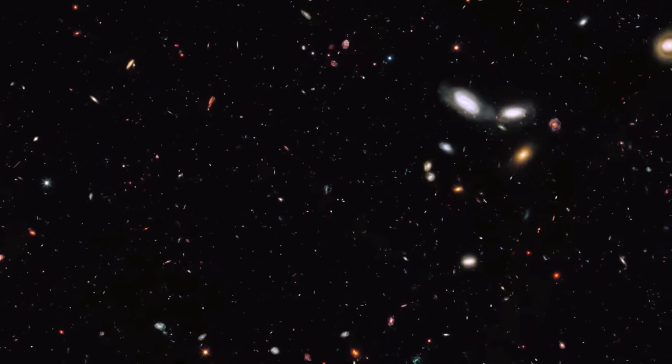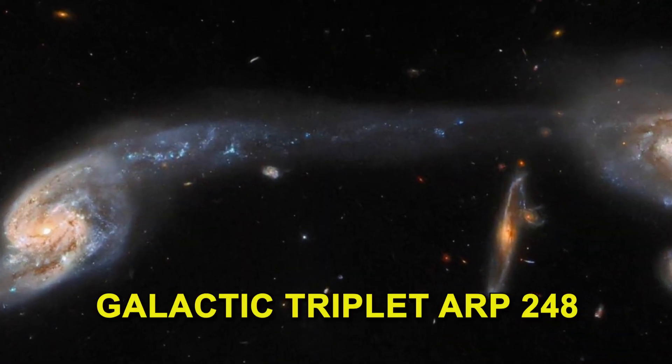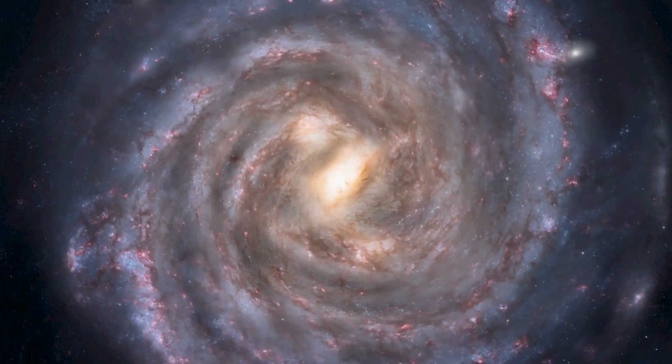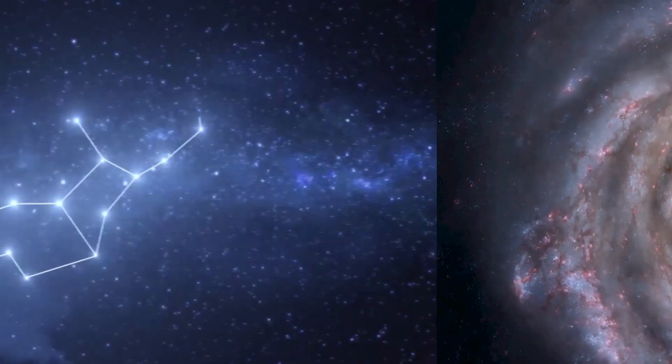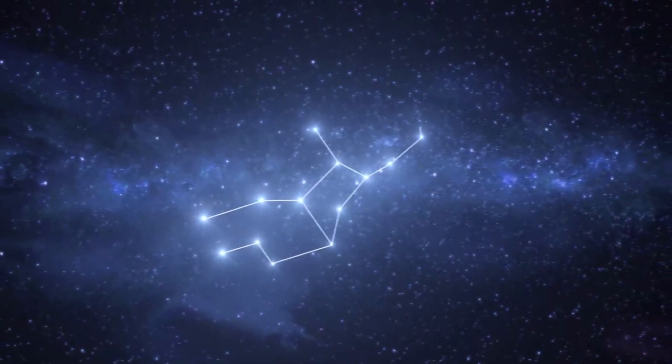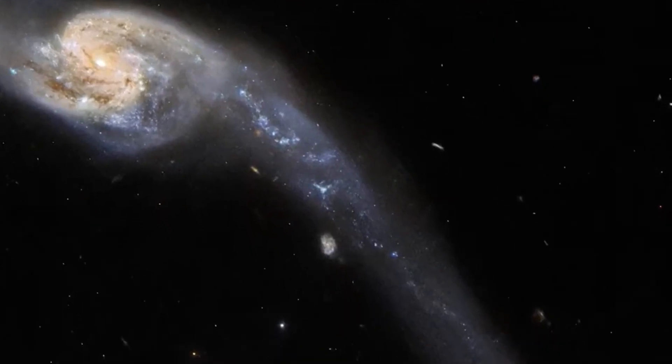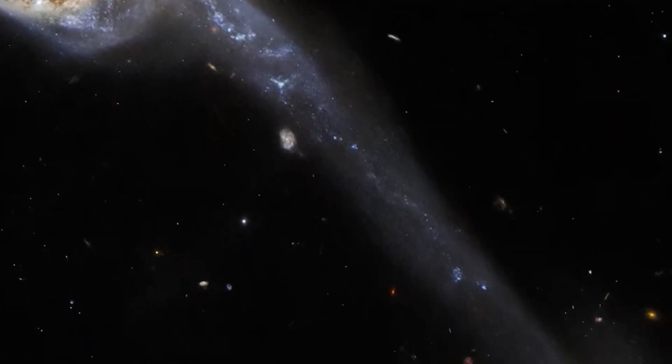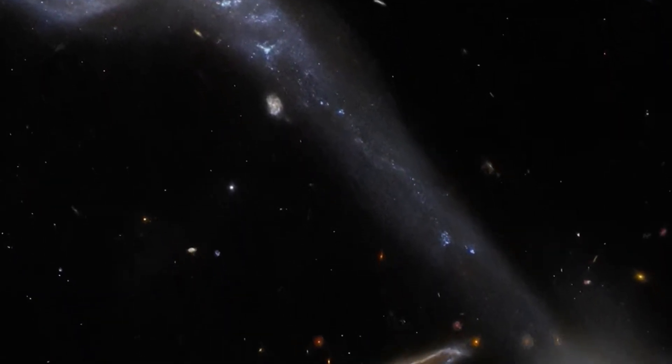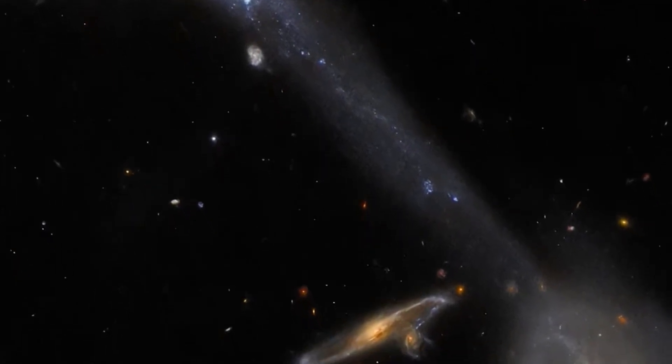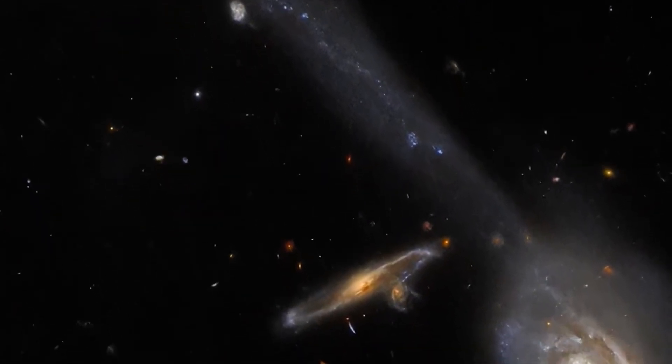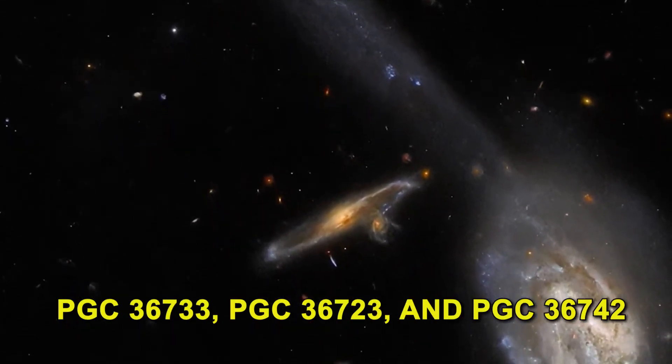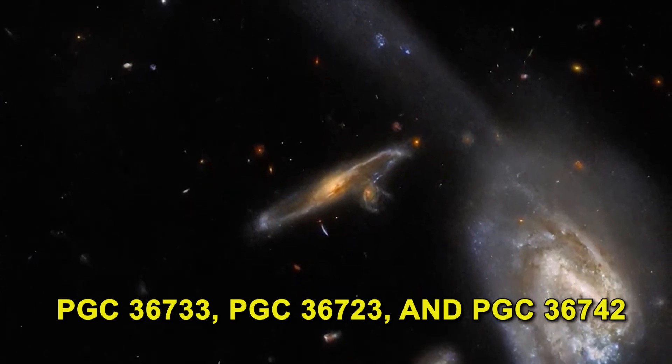Galactic triplet ARP-248 is a group of three galaxies located in the constellation Virgo. It lies around 200 million light-years from Earth and has two large spiral galaxies which flank a smaller galaxy in an unrelated background. Another name for the galactic triplet ARP-248 is Wild's triplet, because it comprises three galaxies: PGC 36733, PGC 36723, and PGC 36742.